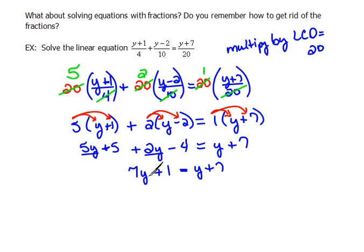Now, we have all of our combinations done. We need to actually move this y so that it's with the other y. It's with its like term. And we're going to do that by doing the opposite of a positive y, which would be a negative y. We're going to subtract y from both sides to get 7y minus y is 6y plus 1 equals 7.